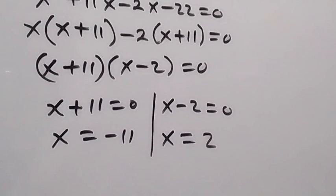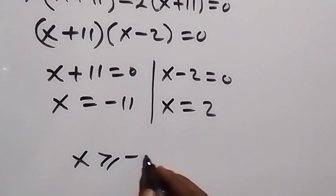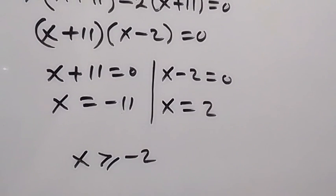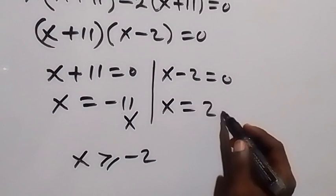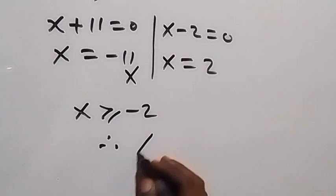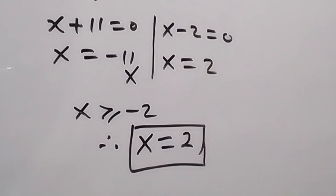Recalling our domain condition that x must be greater than or equal to −2, x = −11 does not satisfy this condition. Therefore the solution is x = 2. We have come to the end of this problem. Thank you for watching, don't forget to subscribe and give a thumbs up. See you in the next class, bye for now.